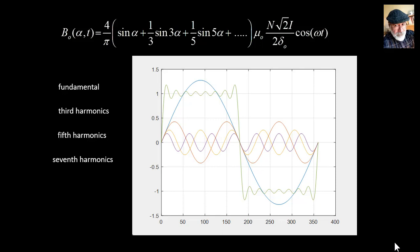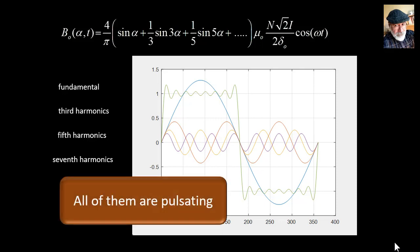But now, if we multiply that by the function of time and the amplitude, mu naught, number of turns, root 2i divided by 2 delta naught, multiplied by cosine of omega t, we know what's going to happen. All of them will pulsate at the frequency of omega radians per second. They will increase and decrease and change sign cosinusoidally with time. But their shape remains in space what it is.